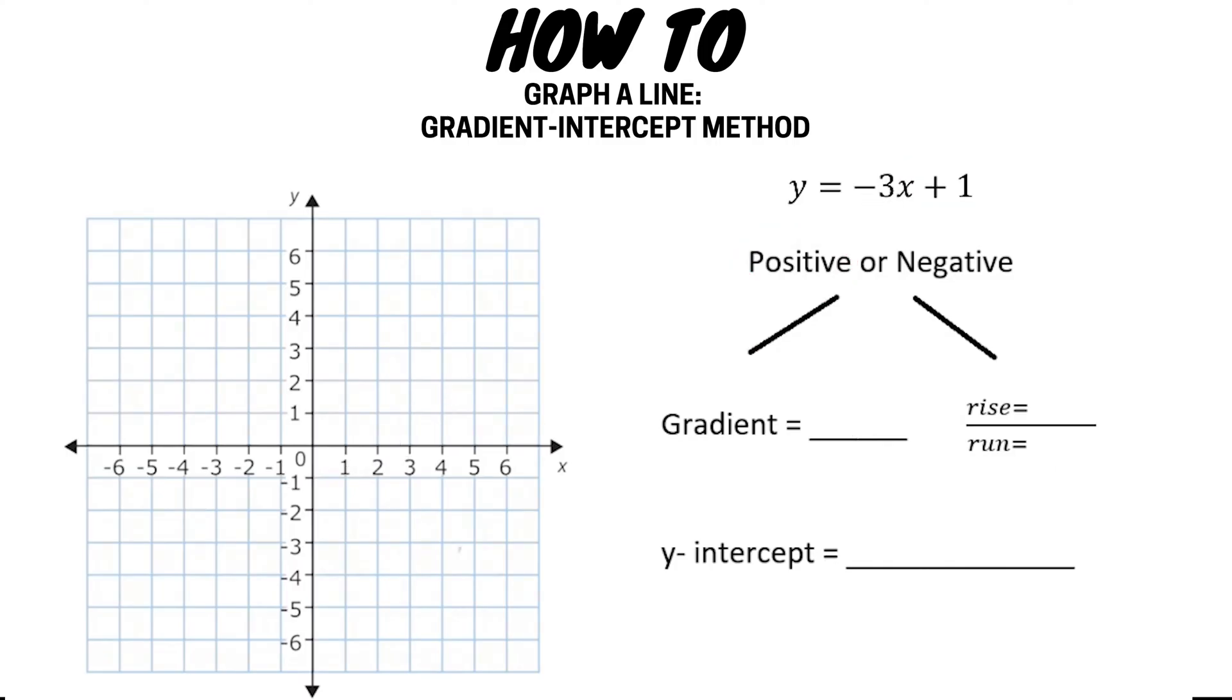Now on to our second example. We will be graphing the line y equals negative three x plus one. So looking at the number in front of the x, we can see that it is a negative three, indicating that our line will have a negative gradient.